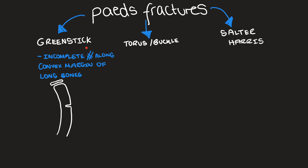Greenstick fractures are incomplete fractures along the convex margin of long bones. In this diagram here, we can see that instead of a complete fracture, which you'd see in the adult population, because of the malleability of the bone, you get an incomplete fracture along the convex margin, as seen here.